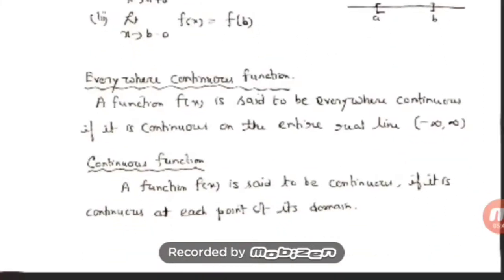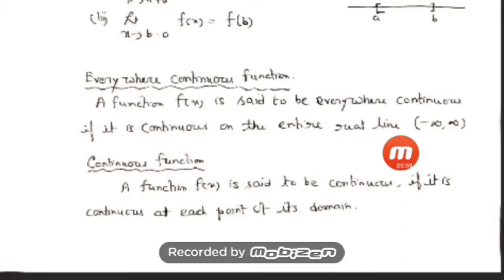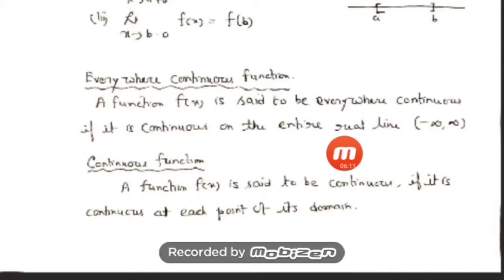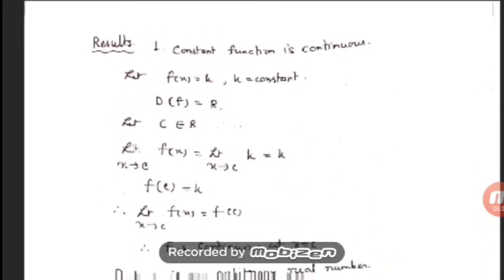A function f(x) is said to be everywhere continuous if it is continuous on the entire real line (−∞, ∞), i.e., at each and every real number. More generally, a function is called a continuous function if it is continuous at each and every point on its domain.